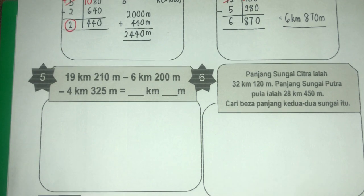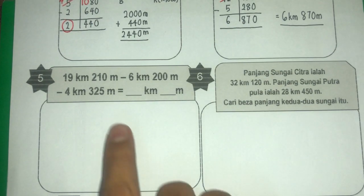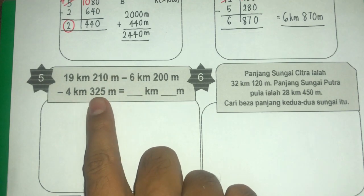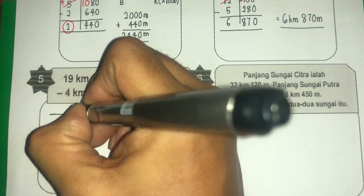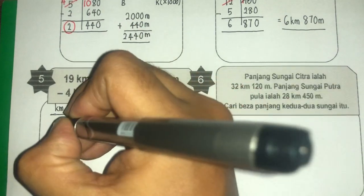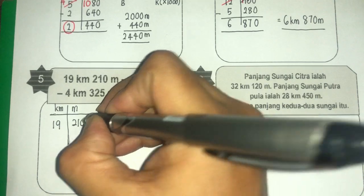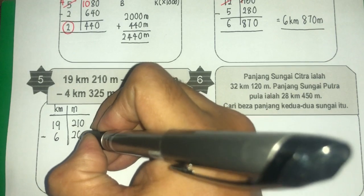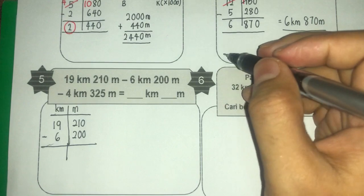Bila sebut 3 nilai ni, macam cikgu cakap tadi, kita kena selesaikan secara beransuran. Selesaikan dahulu yang pertama, lepas kita dapat jawapan baru tolakkan dengan nombor yang ketiga. Kena buat berperlahan-lahan, beransur-ansur. Tolak: 6 kilometer, 200 meter.